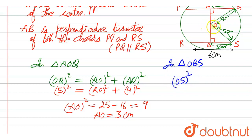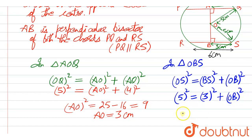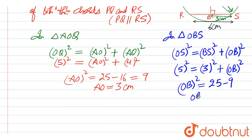Similarly, in triangle OBS: OS² = BS² + OB². OS is 5 centimeters, so 5² = 3² + OB². Therefore OB² = 25 − 9 = 16, and OB = 4 centimeters.